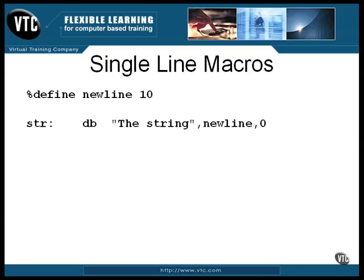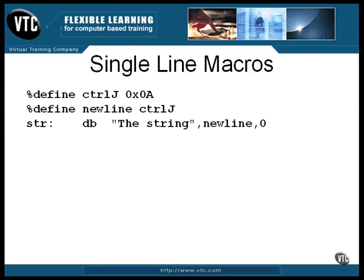You can define it as a macro and use it this way, or it might be more descriptive to express a newline character in hex. But that's up to you. The newline character is the same as control J, which means you could define it in two statements this way.